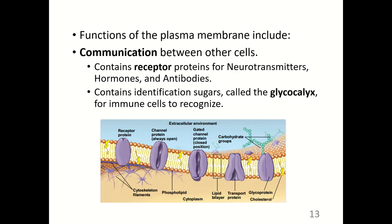Another function of the plasma membrane is communication between other cells. Cells contain receptor proteins for neurotransmitters, hormones, and antibodies. Cells also contain identification sugars called the glycocalyx, which serves as cell-to-cell communication, particularly for the immune system. Your body recognizes your cells by their glycocalyx, and also recognizes pathogenic cells because their glycocalyx is different from your self-cells.